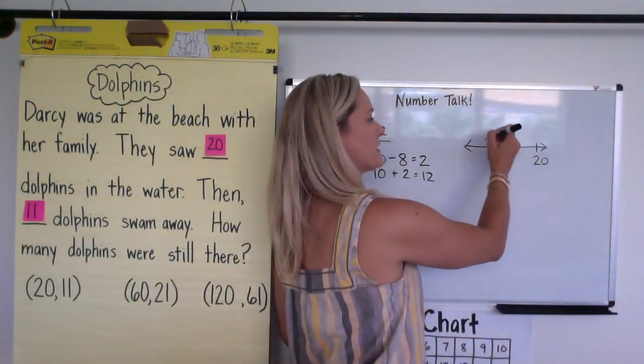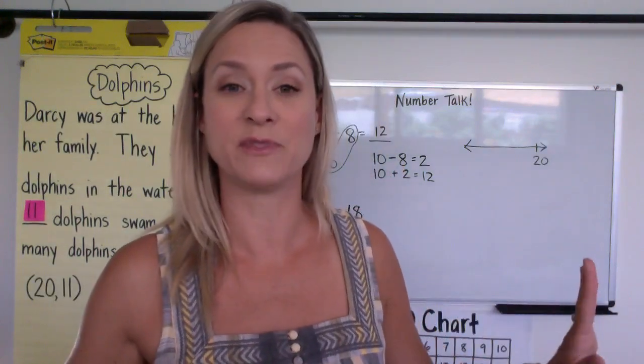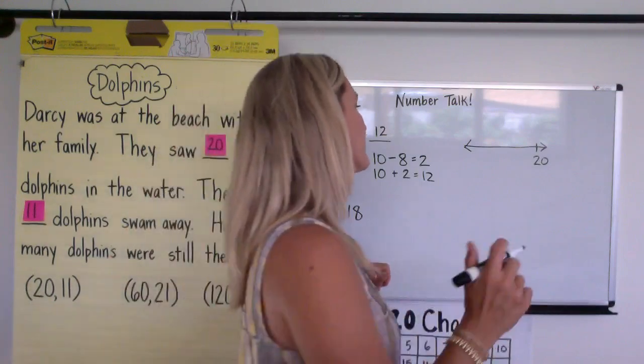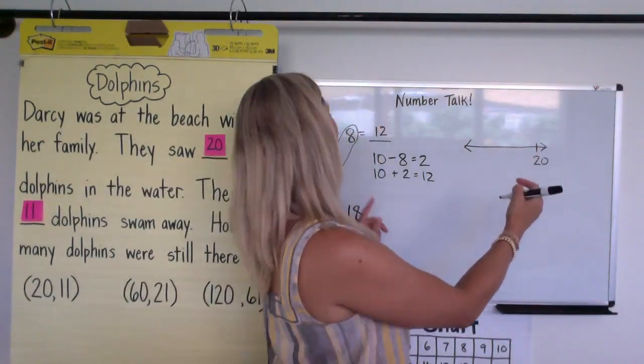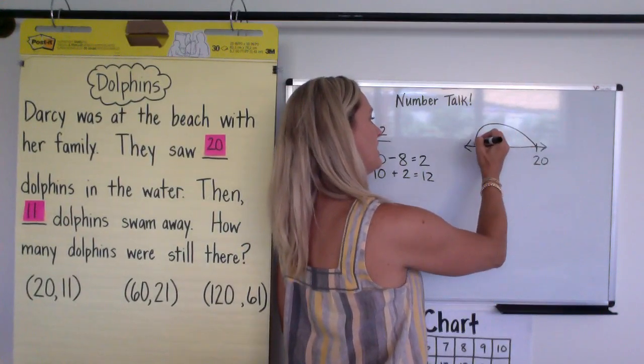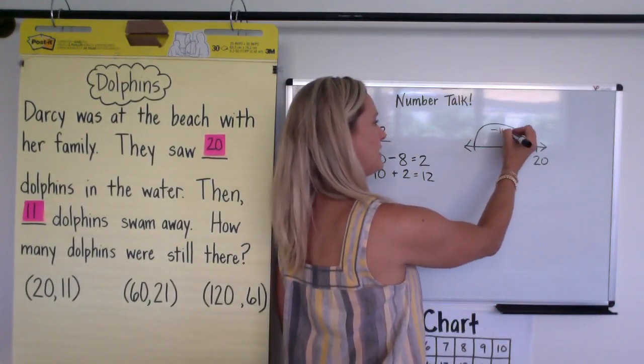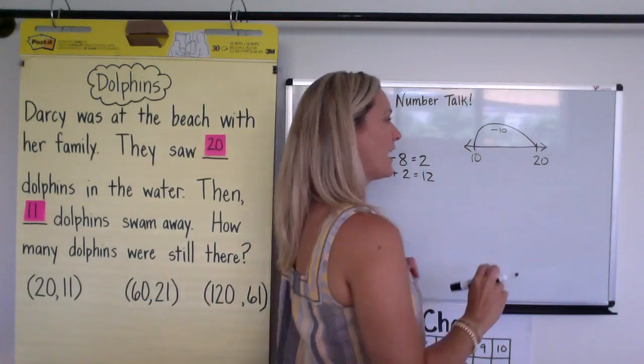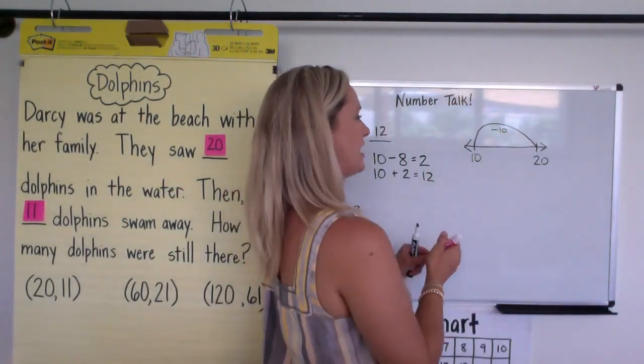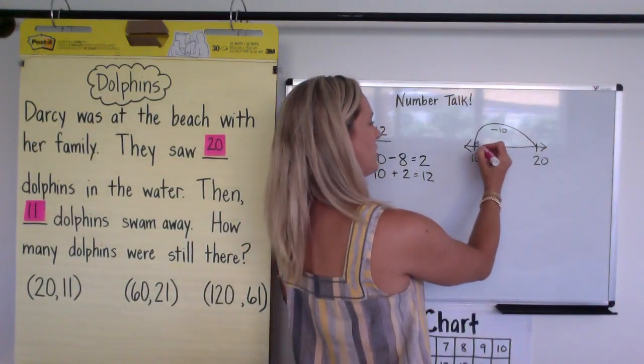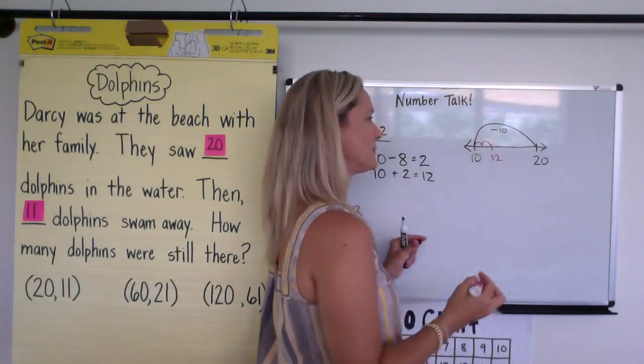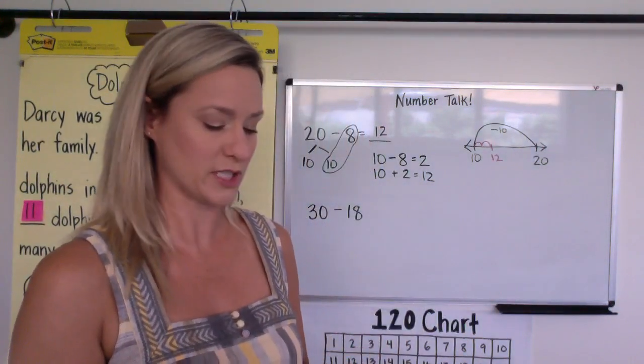Now some kids may hop back 1, 2, 3, 4, 5, 6, 7, 8. That's fine. Let them do that if that's what their strategy is. Some kids may say, oh, I'll take off 10. 20 minus 10 is 10. And then they said, well, I know really I only had to take off 8, so I'll add 2 back on and that will land me at 12. There's all kinds of different ways they may approach this.